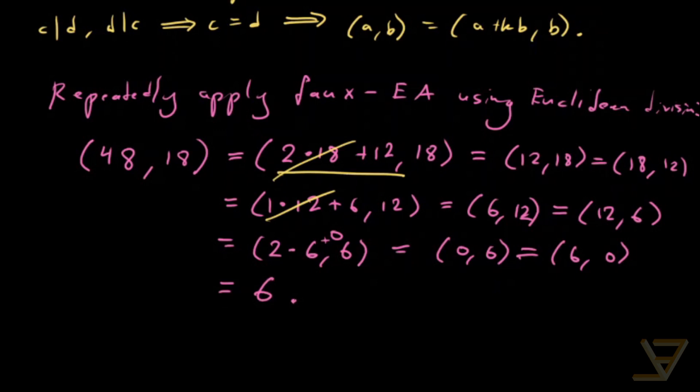So this is how it generally works with the Euclidean algorithm. You keep going until you have an integer and 0, and the answer has to be that integer, which is the second last remainder, the first or the last non-zero remainder.